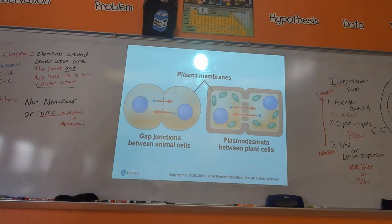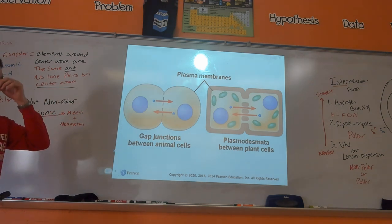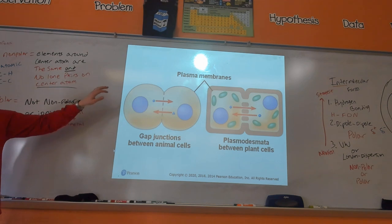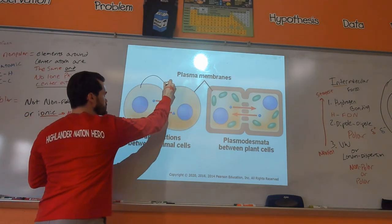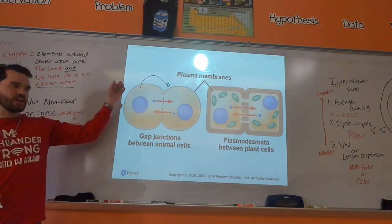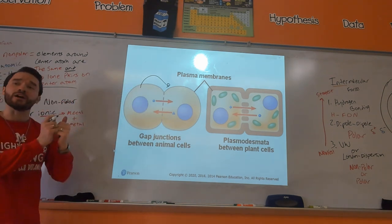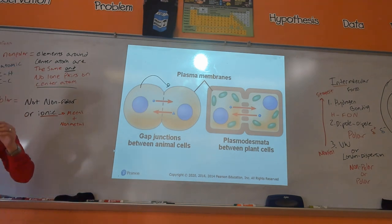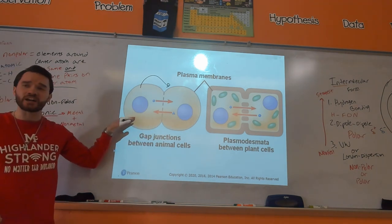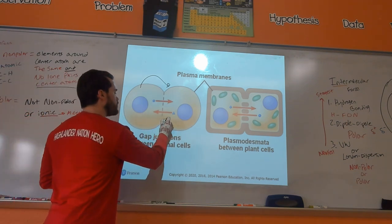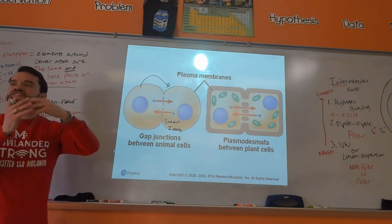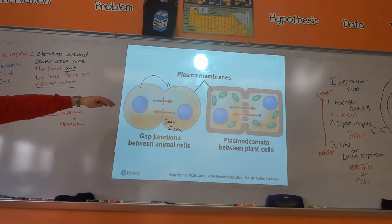We're looking at cell signaling. If you have two cells that are literally right next to each other, they can communicate by sending signals, but they can also communicate through openings where they share cytoplasm. In animal cells, these are called gap junctions — small molecules and ions pass through them. In plants, it's called plasmodesmata.